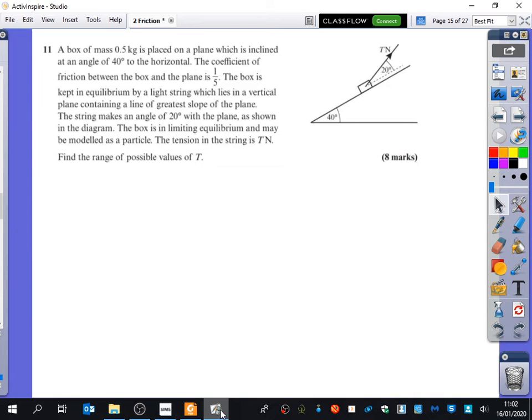So this was one of the questions from the homework that you guys wanted to talk about because it was difficult, because it asked about a range of particular values. So I'm just going to read through the question nice and quick. We've got a box of mass 0.5 kilograms, so I'm going to add that immediately to my diagram. It's on a plane which is inclined at an angle of 40 degrees to the horizontal. The coefficient of friction between the box and the plane is a fifth, so mu is a fifth.